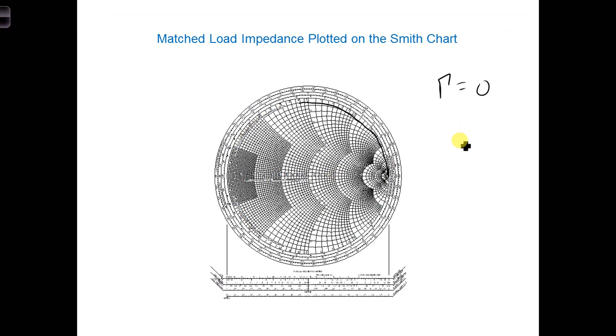For a matched condition, there's no reflection, and ZL equals Z naught. To plot this load impedance, first we would normalize it. So to find little ZL, we would take capital ZL and divide by capital Z naught. This gives a value of 1.